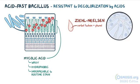The stain binds to the mycolic acid in the mycobacterial cell wall, and after staining, an acid decolorization solution is applied, which removes the red dye from the background cells, tissue fibers, and any organisms in the smear except mycobacteria, which retains the dye. So Mycobacterium leprae appears bright red on the blue background.